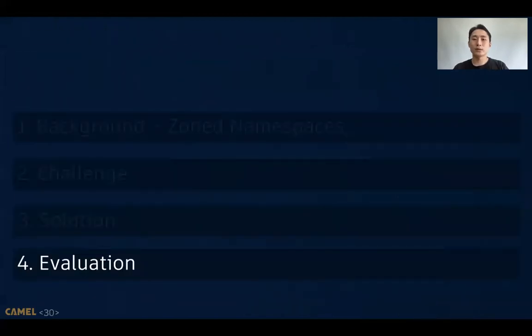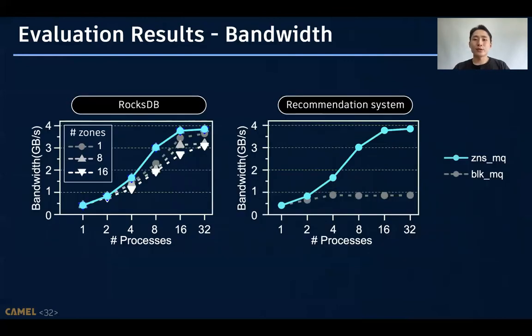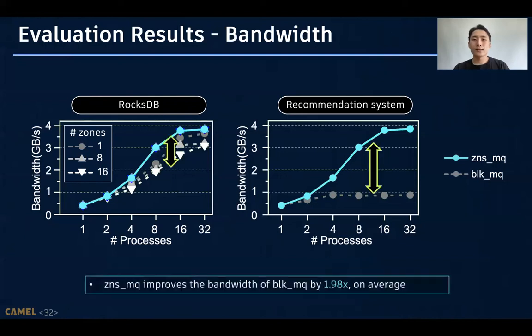Now, let's see the evaluation. We compare two schedulers, which are BLK-MQ, the Multi-Queue IO scheduler of Linux, and ZNS-MQ, which utilizes our interference profiling information. And we chose two workloads, RocksDB and the recommendation system. We performed our evaluation on the production ZNS SSD, whose zone size is 96 megabytes. The figures show the bandwidth of ZNS-MQ, BLK-MQ, and BLK-MQ on RocksDB and the recommendation system. As shown in the figure, our ZNS-MQ improves the bandwidth of BLK-MQ by about two times on average.